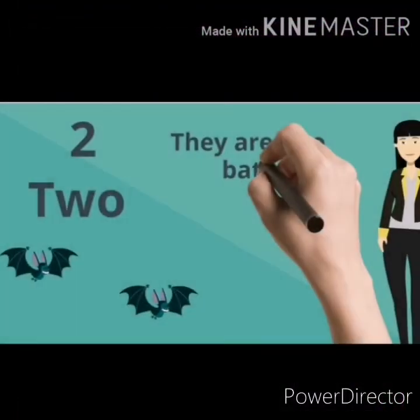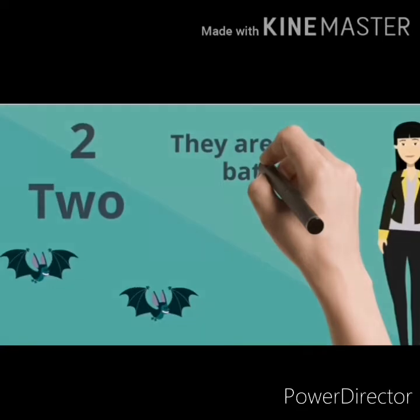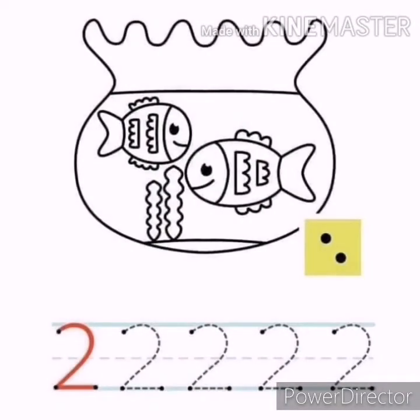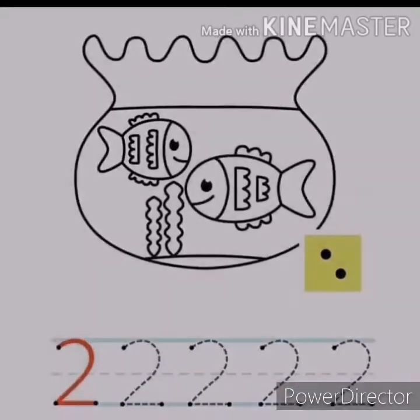What is this number? Two. Bat. Let's count: one, two. There are two bats. What is this number? Two. Let's count the dots: one, two. There are two dots.